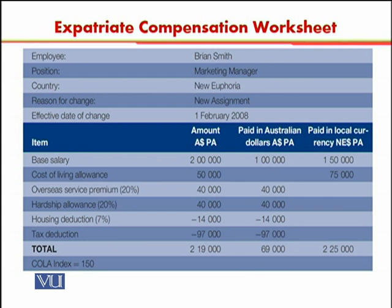The company is going to provide housing to this expatriate in New Euphoria, and that cost is balanced and deducted from the person's compensation package. Seven percent of the salary is deducted for the housing facility provided by the organization, which amounts to $14,000. You can see this appears as a negative amount, deducted from the Australian dollar payment.